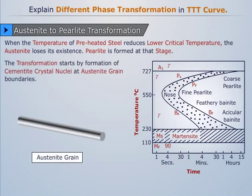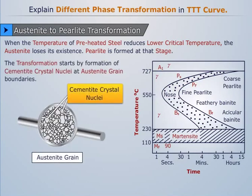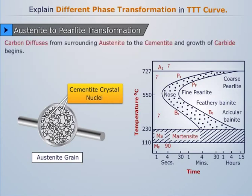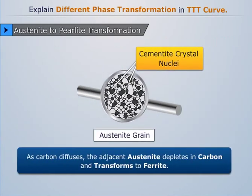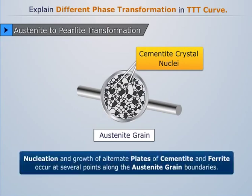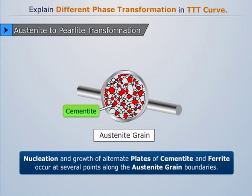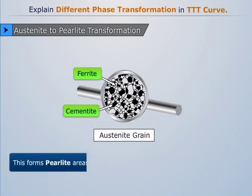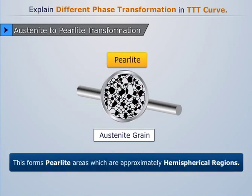The transformation starts by formation of cementite crystal nuclei at austenite grain boundaries. Carbon diffuses from surrounding austenite to the cementite and growth of carbide begins. As carbon diffuses, the adjacent austenite depletes in carbon and transforms to ferrite. Nucleation and growth of alternate plates of cementite and ferrite occur at several points along the austenite grain boundaries. This forms pearlite areas which are approximately hemispherical regions.